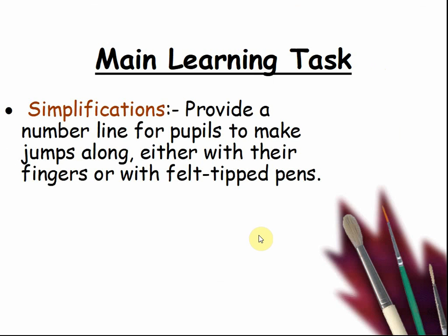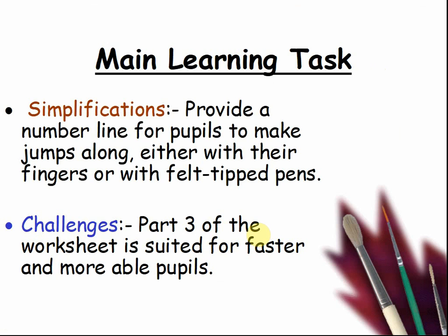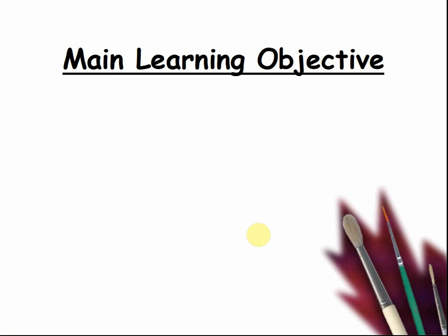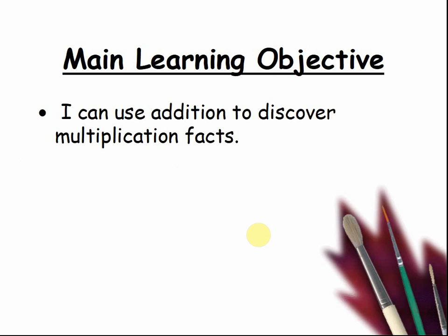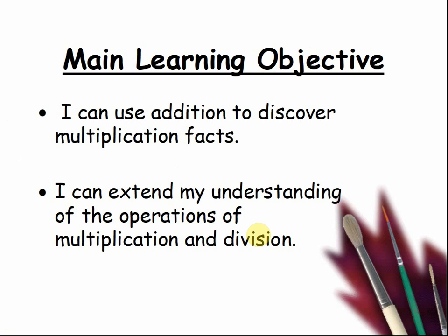The simplification: provide a number line for pupils to make jumps along, even with their fingers or with felt tipping. Challenge: part 3 of the worksheet is suited for the faster and more able pupils who need extra work. Main learning objective: I can use addition to discover multiplication facts. I can extend my understanding of the operations of multiplication and division.